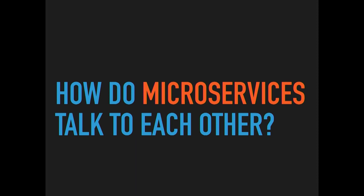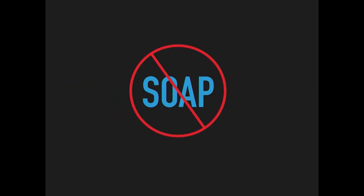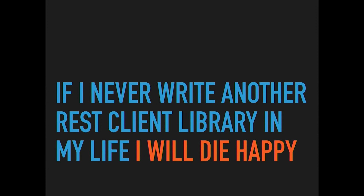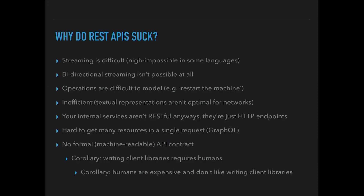I wanted to get started by talking about how microservices talk to each other. We've kind of all agreed that it's HTTP JSON or REST if we're developing public APIs. I will die a happy man if I never have to write another REST client library in my life. They are just the most boring things to write — the same JSON parsing over and over again, the same issues with HTTP timeouts.